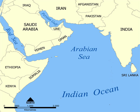Sea has several definitions. A marginal sea is a division of an ocean, partially enclosed by islands, archipelagos, or peninsulas, adjacent to or widely open to the open ocean at the surface, and/or bounded by submarine ridges on the sea floor. A division of an ocean, delineated by landforms, currents, or specific latitude or longitude boundaries. This includes but is not limited to marginal seas, and this is the definition used for inclusion in this list.